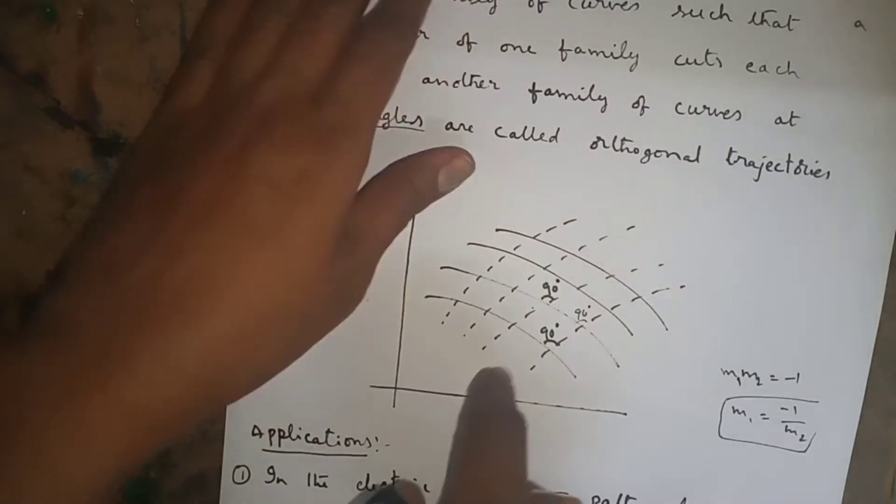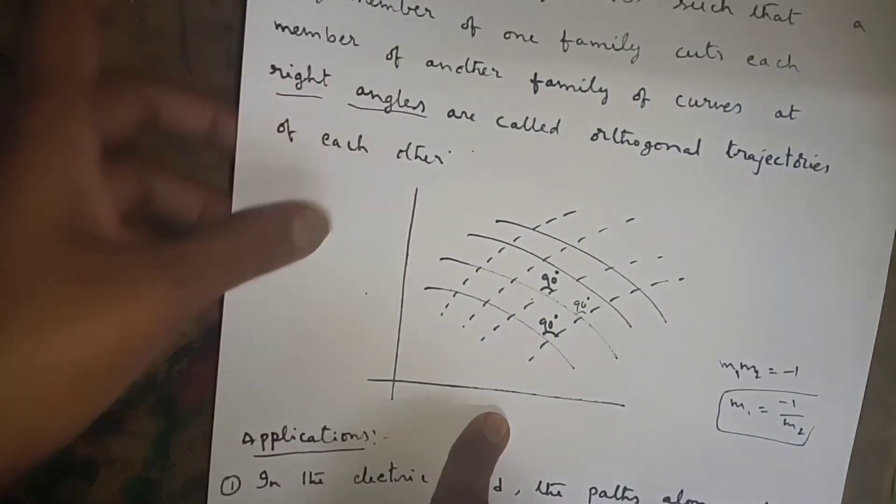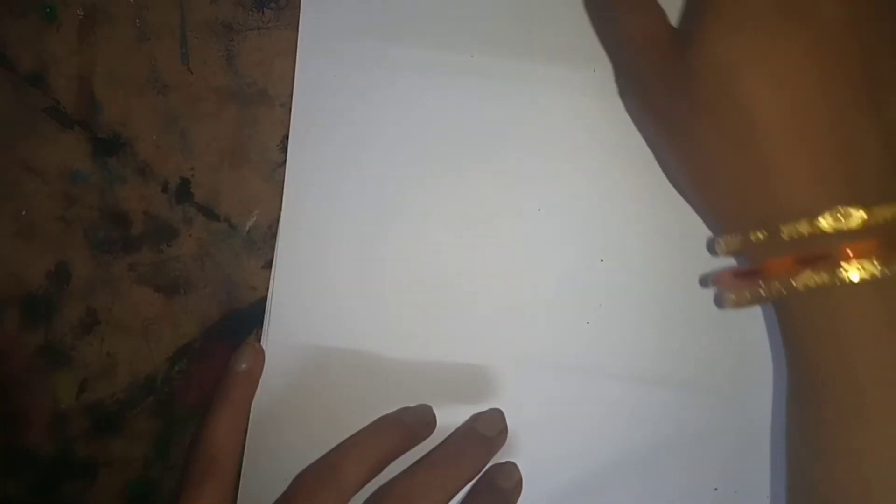In orthogonal trajectories we have two forms: Cartesian form and polar form. If the given curve is in terms of x and y with some constants, it is in Cartesian form. If the given curve is in terms of r, theta, and some constants, then it is in polar form. Now we will see the first problem of Cartesian form.